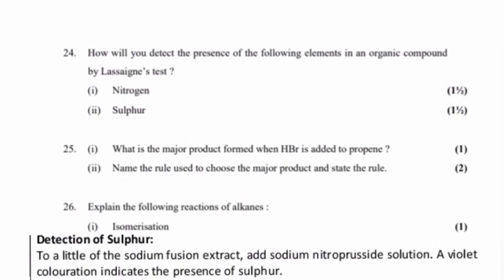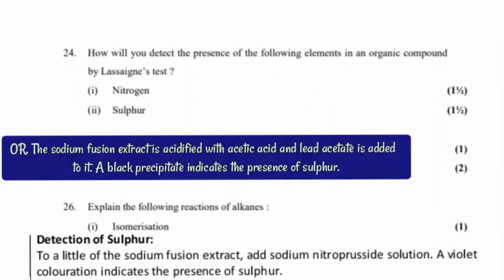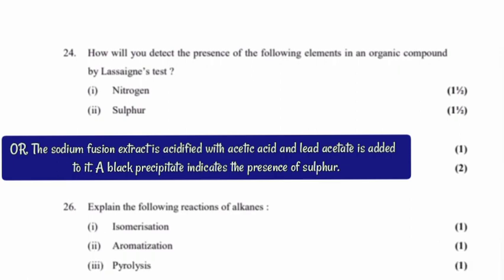Part 2: Sulphur. To a little of sodium fusion extract, add sodium nitroprusside solution. A violet coloration indicates the presence of sulfur. Or, the sodium fusion extract is acidified with acetic acid and lead acetate is added to it. A black precipitate indicates the presence of sulfur.